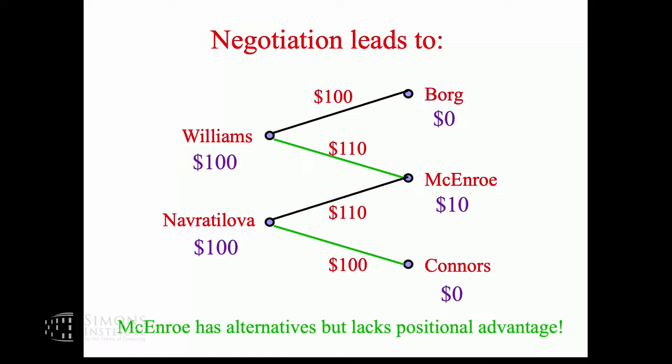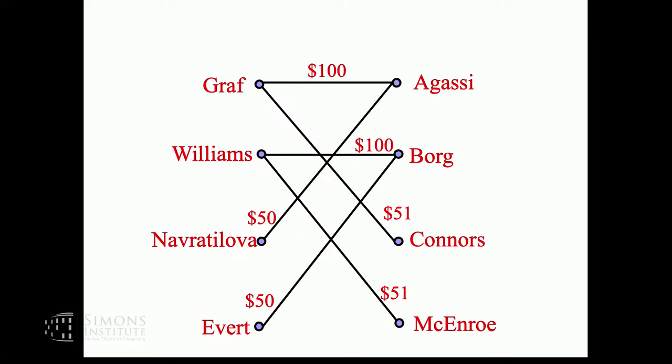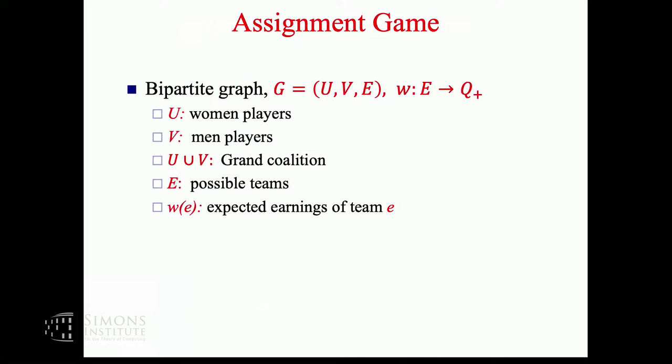So the profit gets divided in a very lopsided way. That's the only way to do it through a negotiation based process. McEnroe has alternatives, but his alternatives are not as good as the positional advantage that Serena and Martina have, because they have players sitting there waiting to play with them for $0. There's a lot going on here.